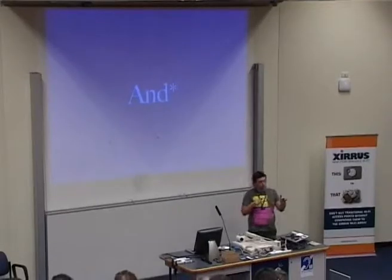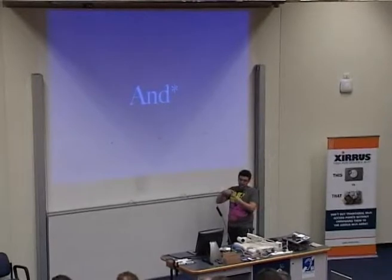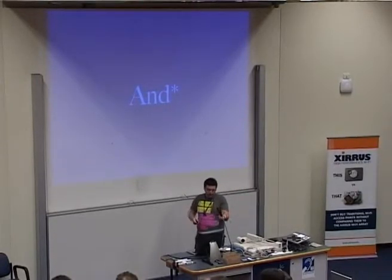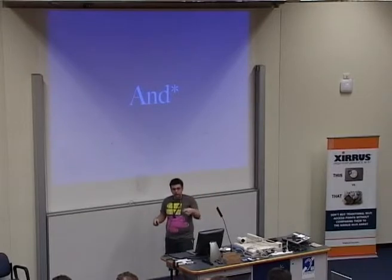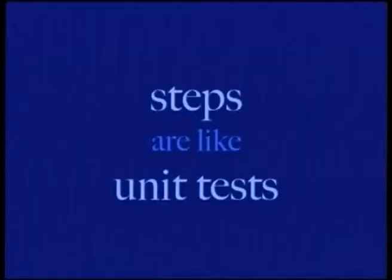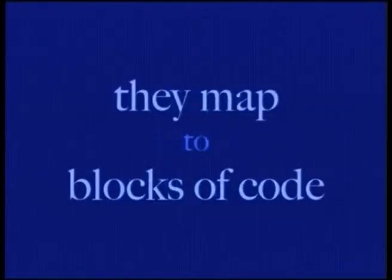A 'given' is about setting up a set of conditions for the test to execute. A 'when' is performing an interaction with that system. The 'then' is checking the output and verifying it matches your expectations. The 'and' is syntactical sugar within the Cucumber file that executes the same keyword above — so if I've got a 'when' and then I do an 'and' on the next line, it'll just treat that as a 'when'.